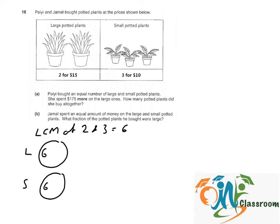To buy 6 large plants, it would be 3 sets of 2. 3 times $15 equals $45. And for the small ones, she has to buy 2 sets. So 2 times $10 equals $20.